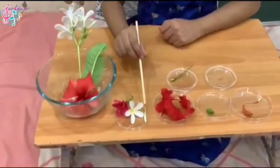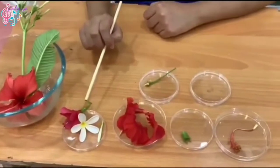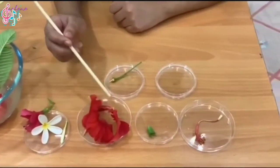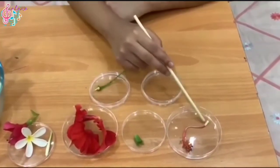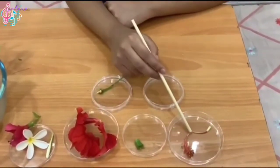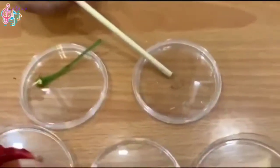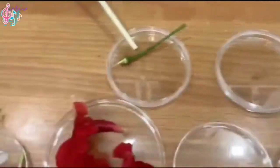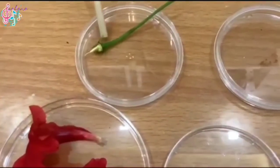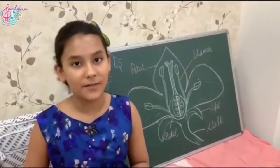So friends, in a nutshell we have covered the bud stage, the complete stage of the flower and its petals, sepal, the female part of the flower which is the pistil, and the male and female reproductive parts of the flower. Thank you. Have a nice day. Keep smiling.